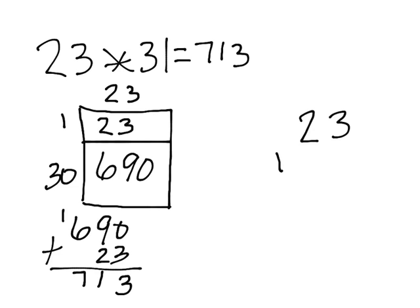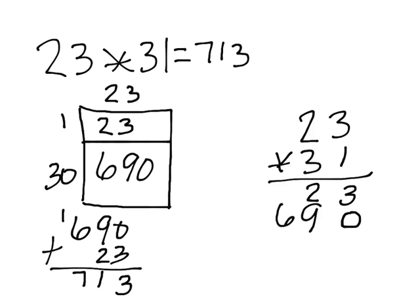we do 23 times 31. We will start with the 1 in the 1's column. 1 times 3 is 3, 1 times 2 is 2. We then place a 0 as a placeholder showing that we are done with the 1's column and move to the 10's. 3 times 3 is 9, 3 times 2 is 6.